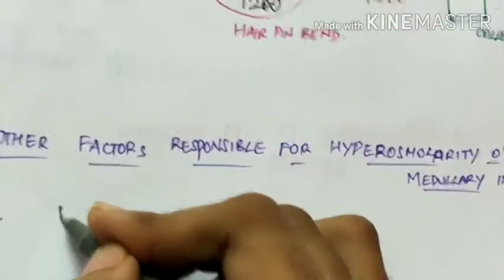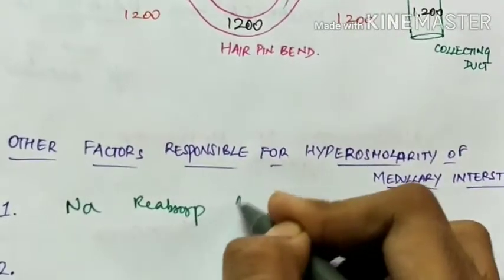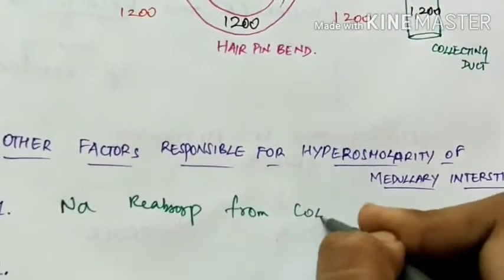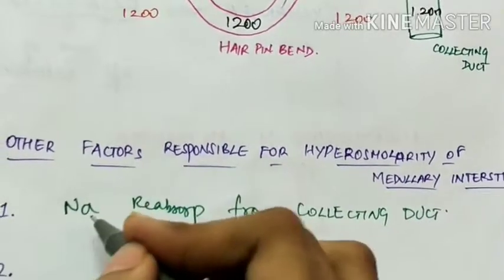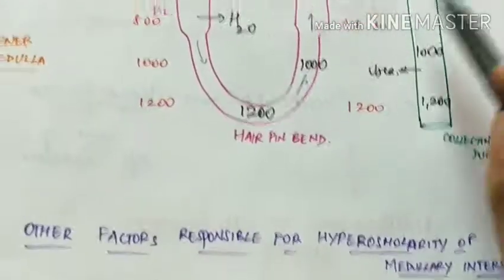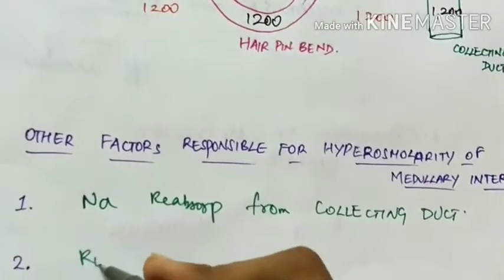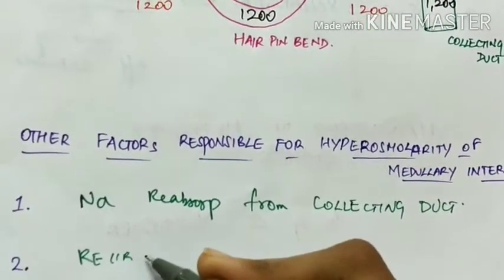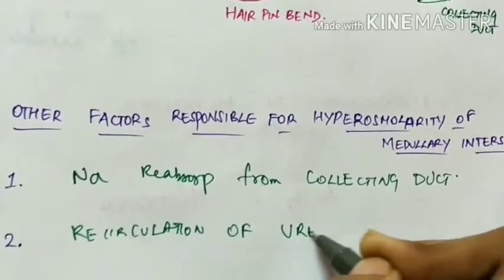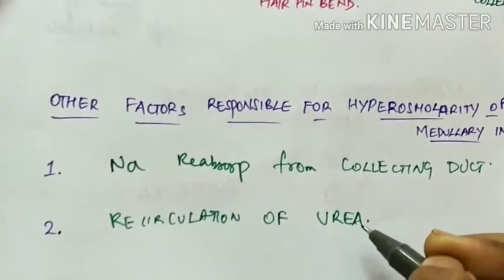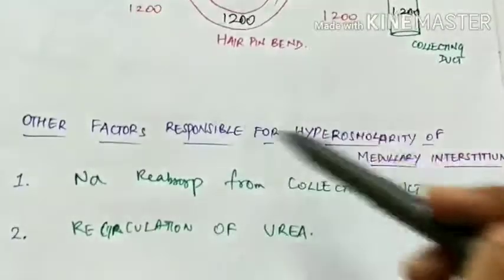The other factors responsible for the hyperosmolarity of the medullary interstitium are: first, sodium reabsorption from the collecting duct — a small amount of sodium is also reabsorbed from the collecting duct; and second, the recirculation of urea. These two factors are also responsible for the hyperosmolarity of the medullary interstitium. This concludes the counter-current multiplier.